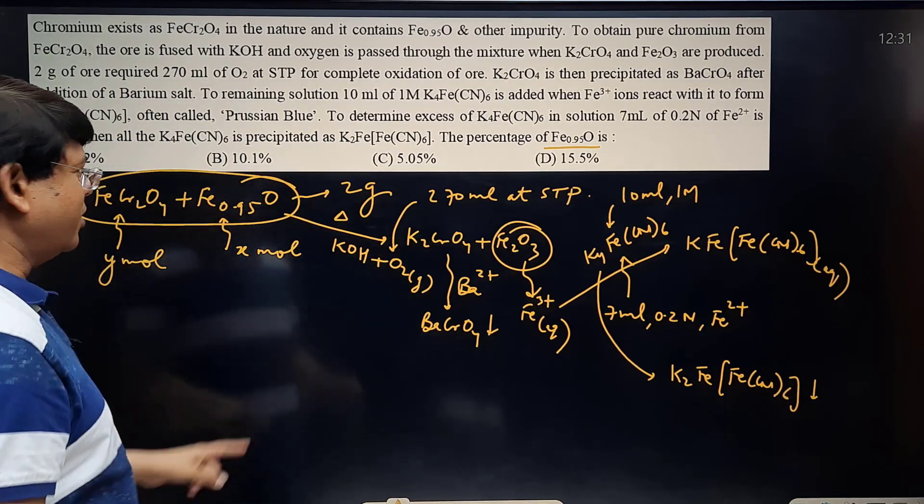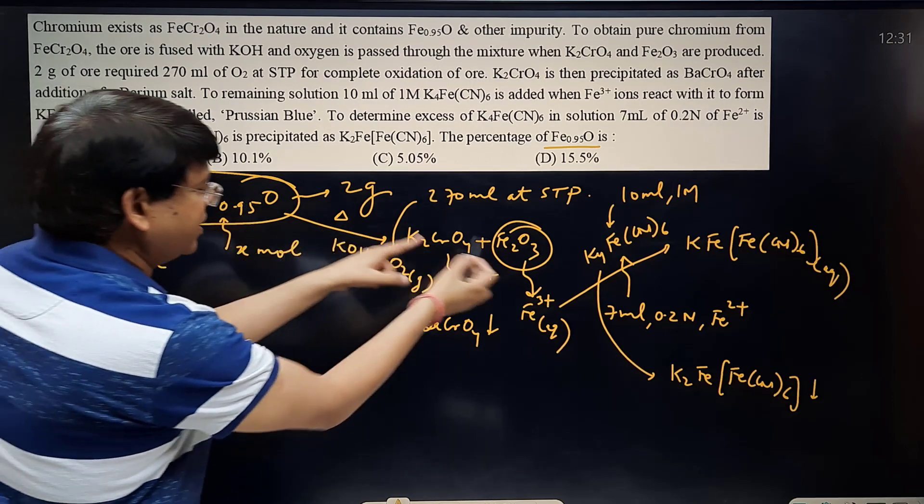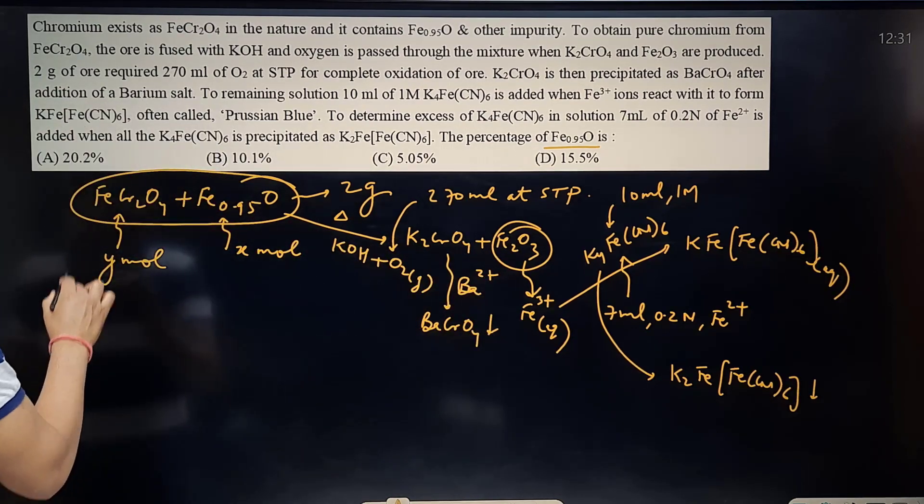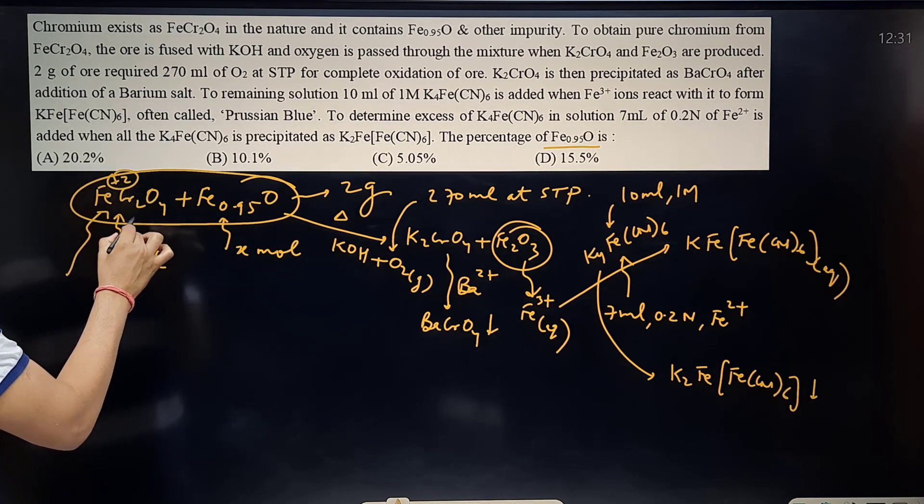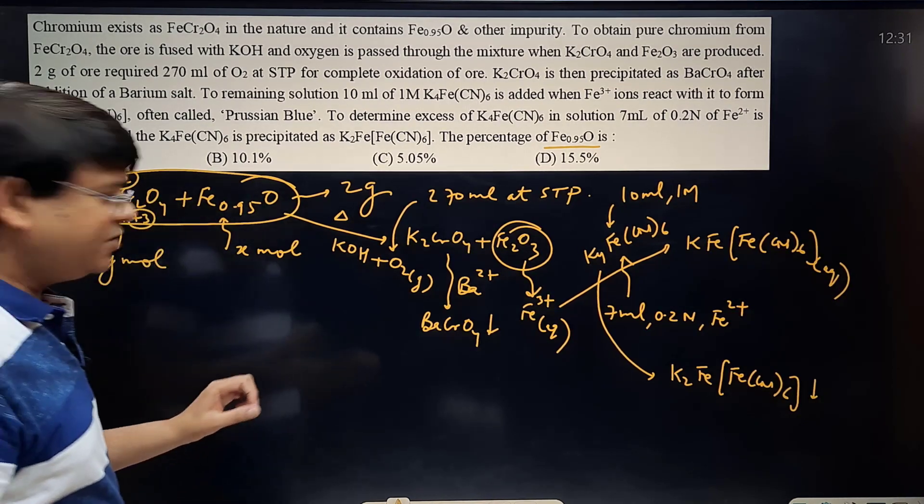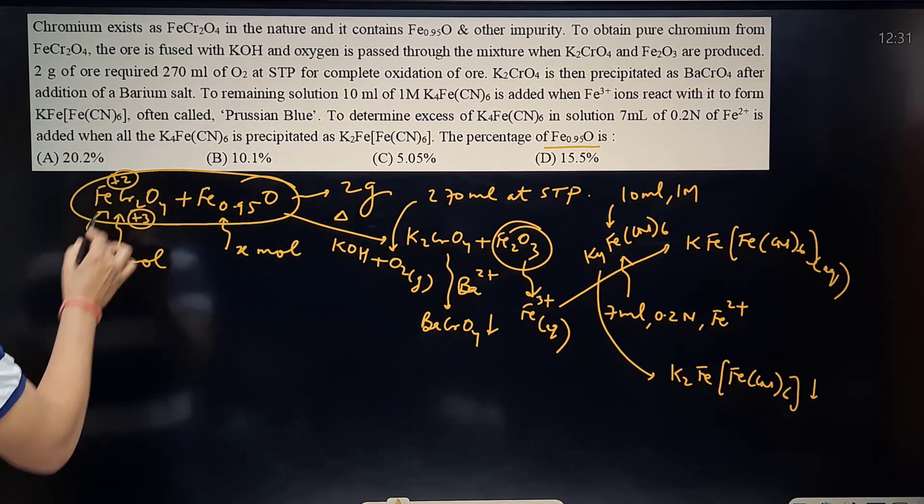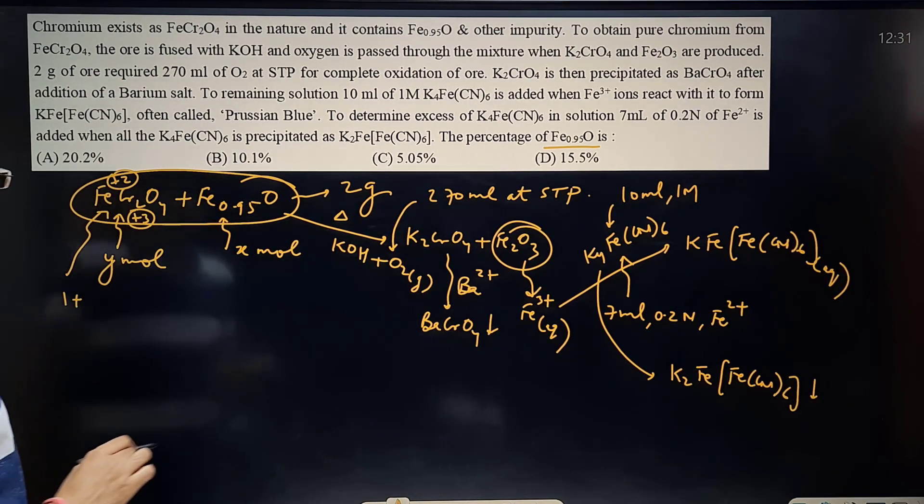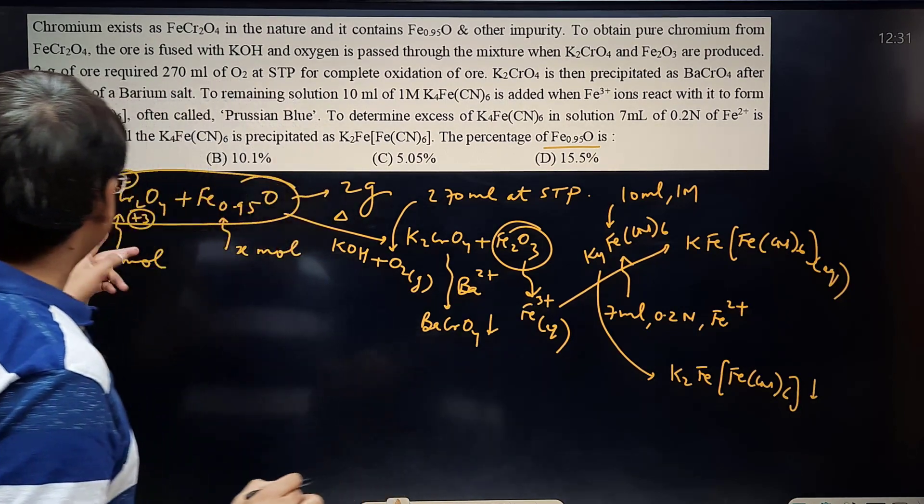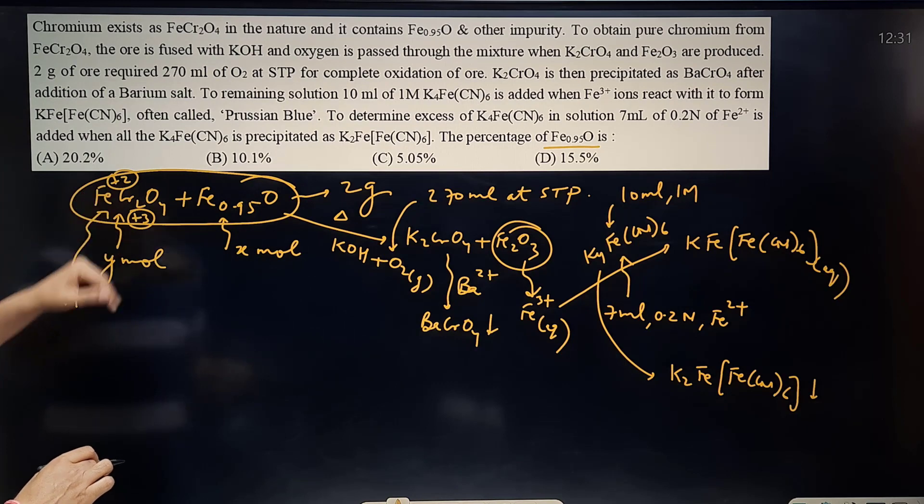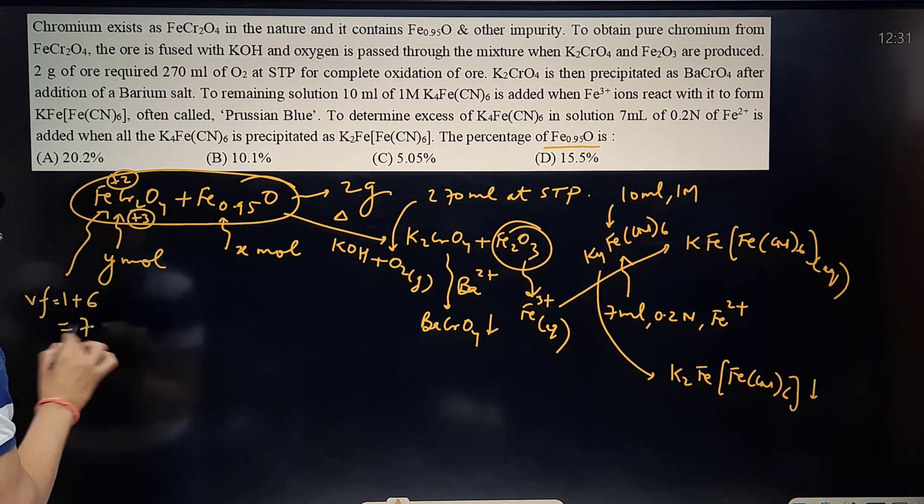First equation you can form is that O2 will oxidize these. Let us see the valency factor of FeCr2O4. Iron is in +2, chromium is in +3. Iron has gone from +2 to +3 here, so change is 1. Chromium has gone from +3 to +6, per chromium change of 3. And 2 chromium atoms, total change 6. So the valency factor is 7 here.